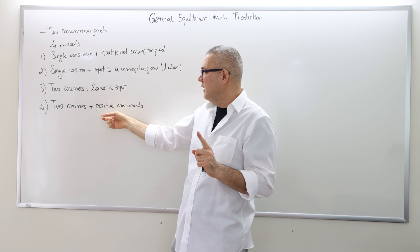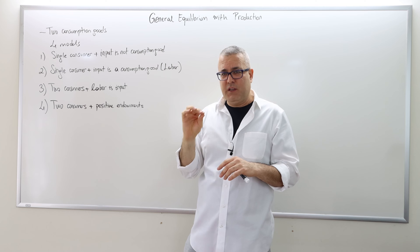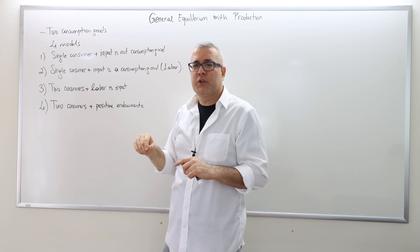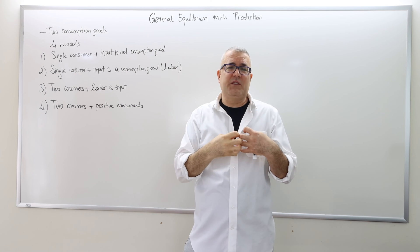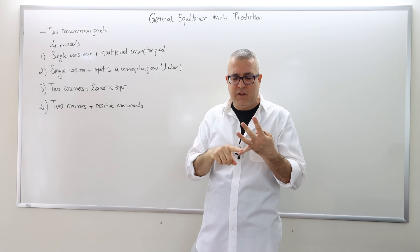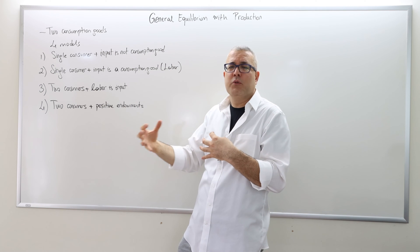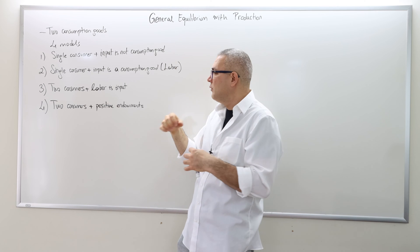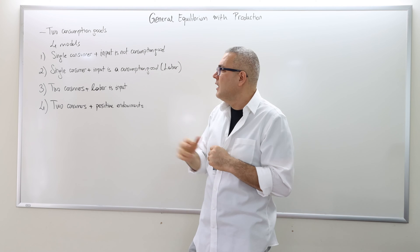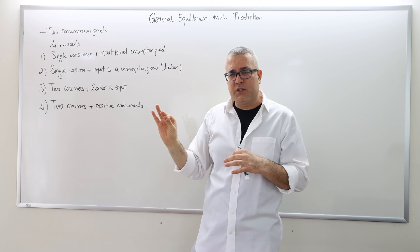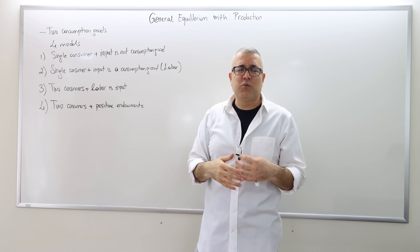More importantly, in models one, two, and three, we're not going to have any initial endowment regarding the consumption goods, except for the input. For the input there has to be some initial endowment — if you don't have any input you can't produce anything. But in model four we will have extra endowment for the consumption goods. Models three and four are very much related — it's just using one of the consumption goods rather than leisure as the input.